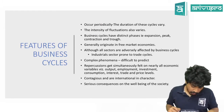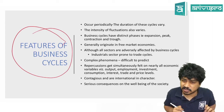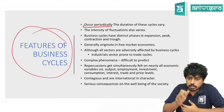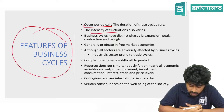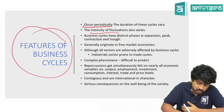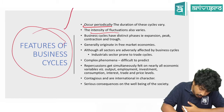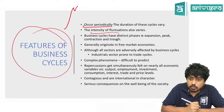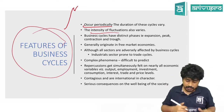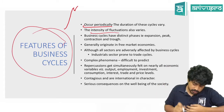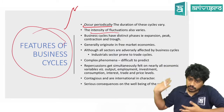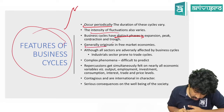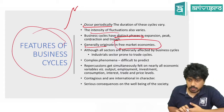Features of business cycle: occurs periodically. Intensity of fluctuation also varies — the economy can go up drastically, come down a little, and go up again. How much it will fall or increase, no one can know — intensity varies. But it will go up and down for sure. It has distinct phases: expansion, peak, contraction. It generally originates in a free market economy.